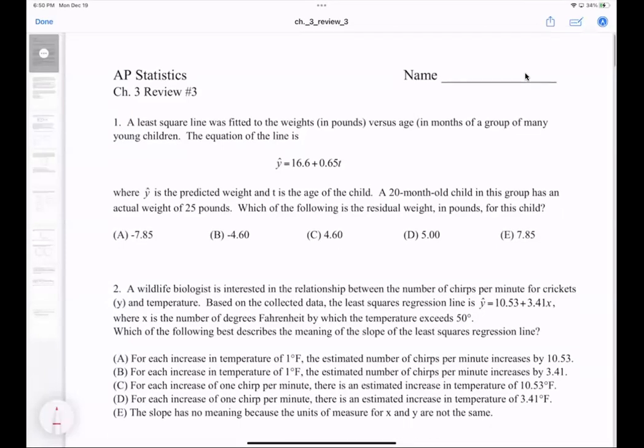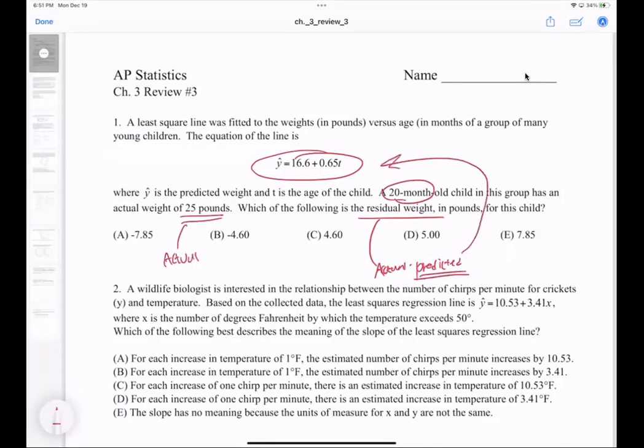For the first question, a least squared regression line is given and they're asking you to find the residual weight, which means we need to do actual minus predicted. A 20-month-old child has an actual weight of 25 pounds. We have the actual but we don't have the predicted, so we need to use the equation above and plug 20 into the function.